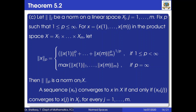We also want to show that a sequence x_n converges to x in X if and only if x_n(j) converges to x(j) in X_j for every j = 1, 2, …, M.